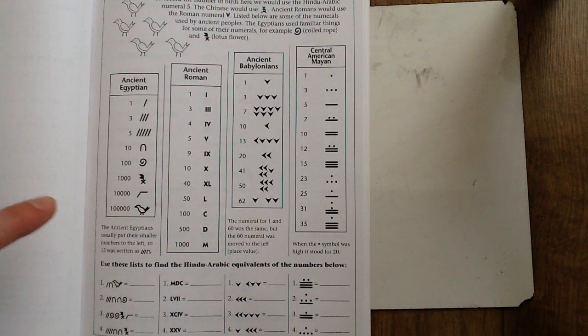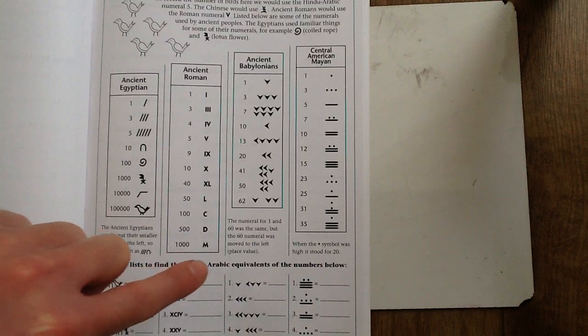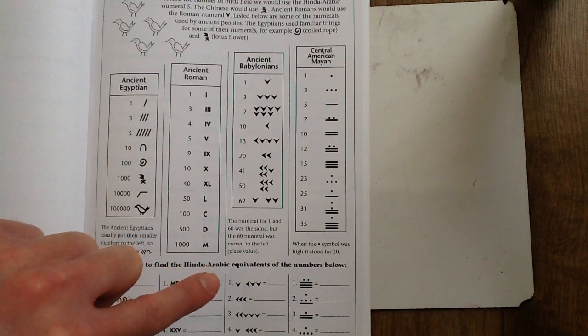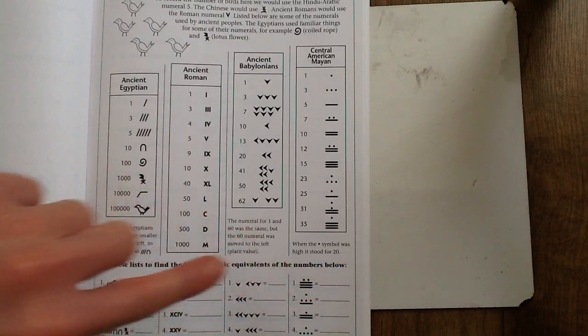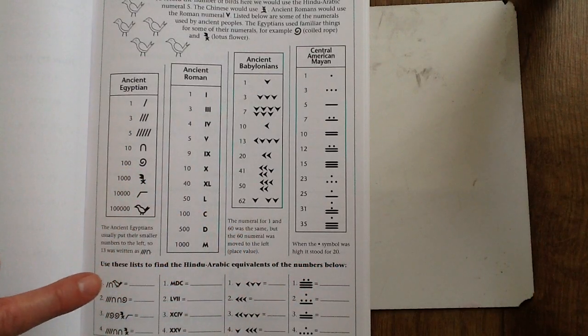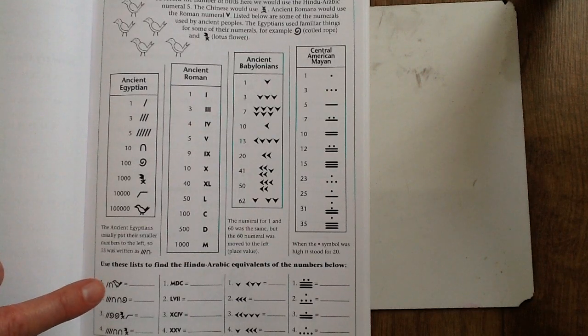Use these lists to find what we call Hindu-Arabic, so normal equivalents, so numbers, of the numbers below. So can you work out, for example, what does this picture show you as a number?